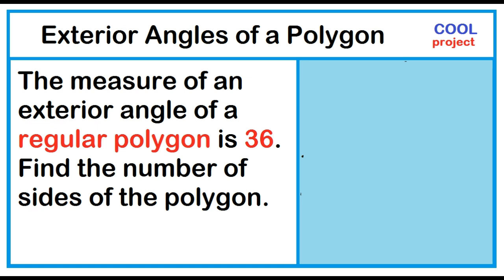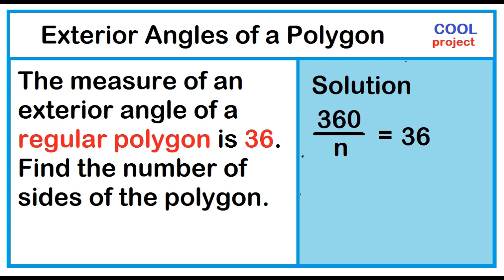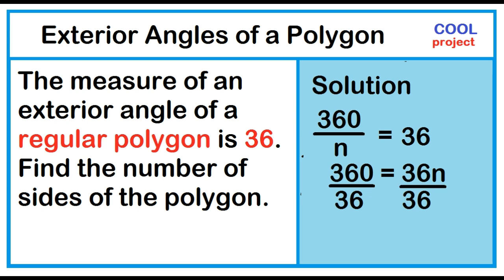The measure of an exterior angle of a regular polygon is 36 degrees. Find the number of sides of the polygon. Solution: 360 divided by the number of sides equals 36. Multiply both sides by n — the resulting equation is 360 equals 36n. Dividing both sides by 36, n equals 10.